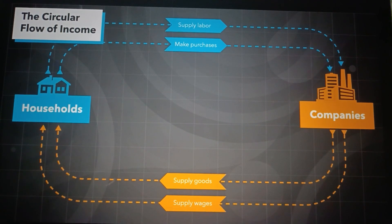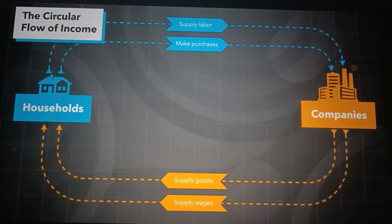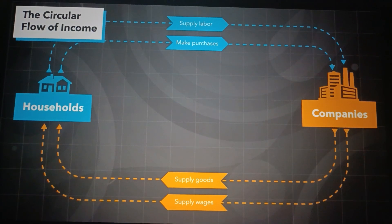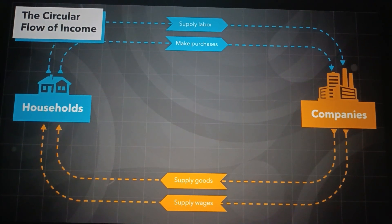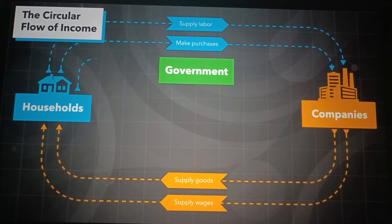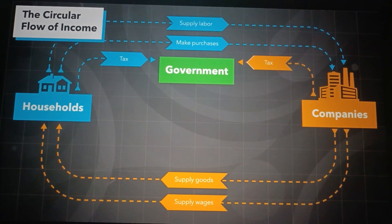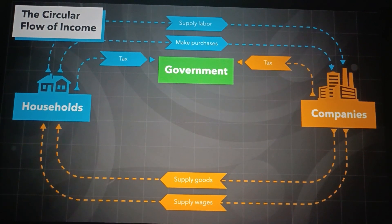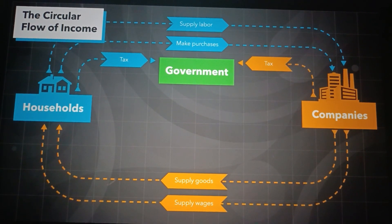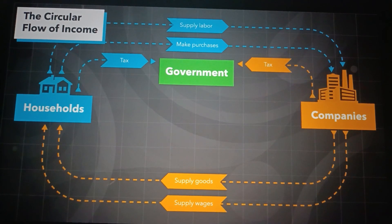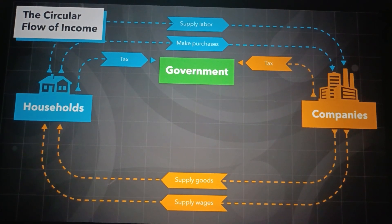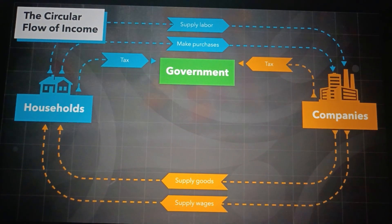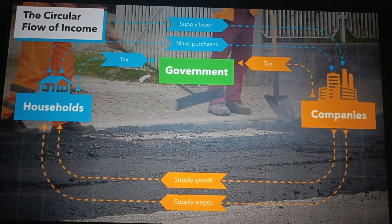Needless to say, a real economy is a bit more complicated. There are a few bits missing if you want a fuller picture of how it all works. First, we need to add in government. Governments collect taxes from households and companies — usually a percentage of income or a fee for services they provide. The government then uses this money to buy things we all need, known as public services.